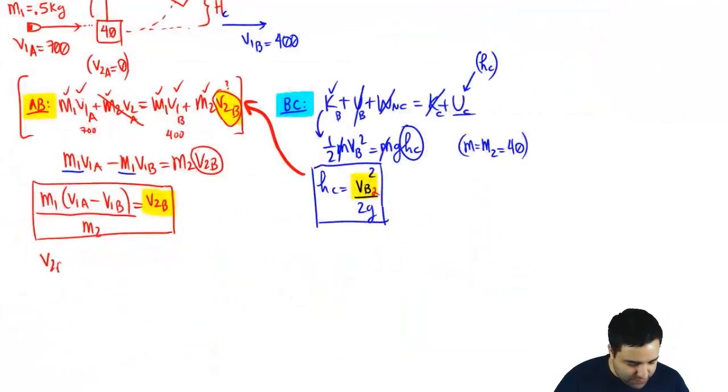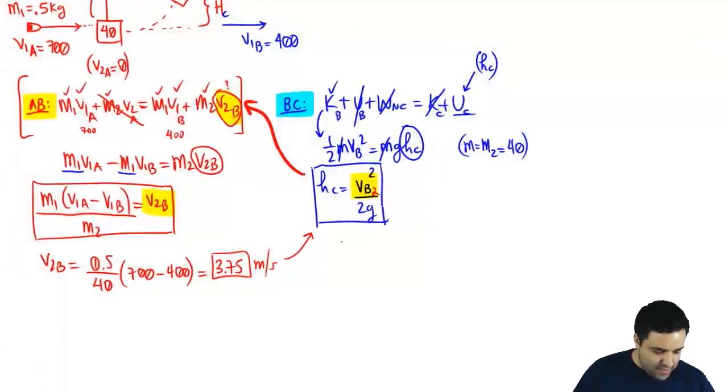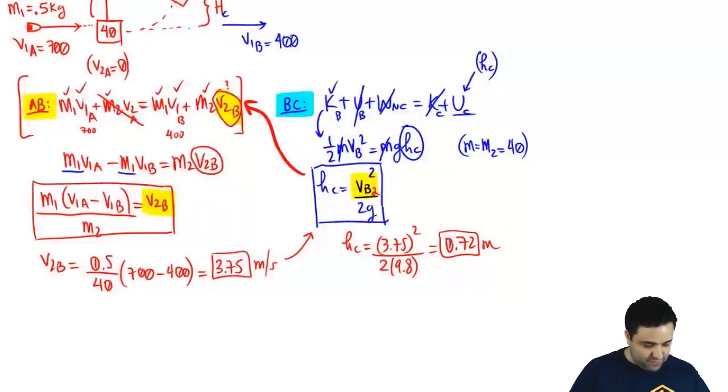Now we're ready to plug. We got all the numbers. V2B is the first mass. M1 is the bullet, which is 0.500. And M2 is the block, which is 40. And the difference of the velocities. The first velocity of the bullet is 700. It comes out with 400. And if you do this, I have it here. You get that this velocity is 3.75 meters per second. So the block gets hit and moves with 3.75. I can now plug this in here. And HC will be 3.75 squared divided by 2 times 9.8. And again, if you do this, you get that the heights of C is 0.72 meters. Okay? 0.72 meters. That is the first answer, part A.